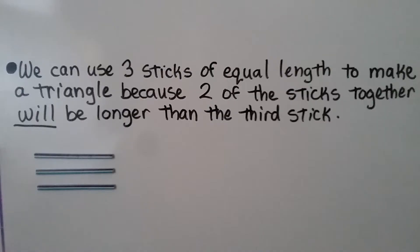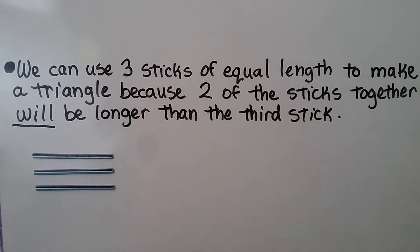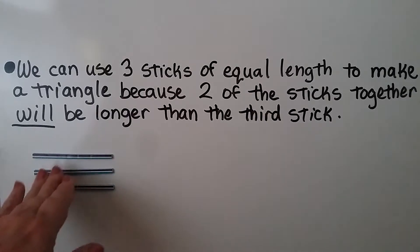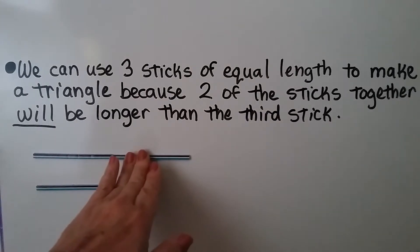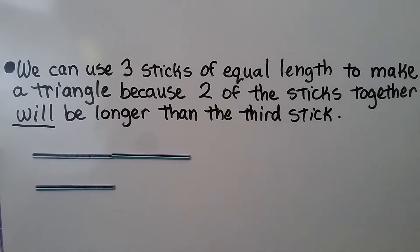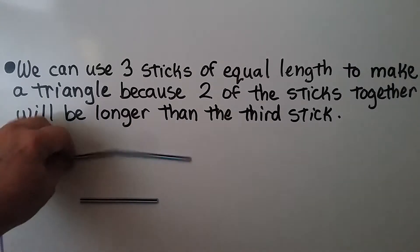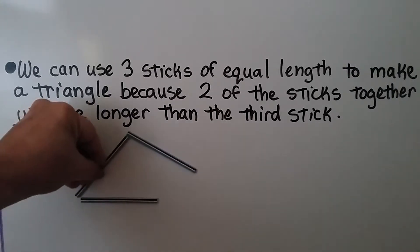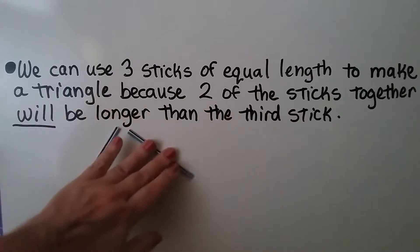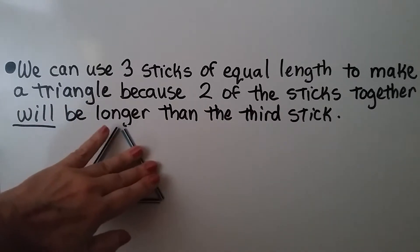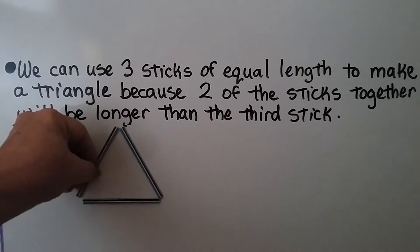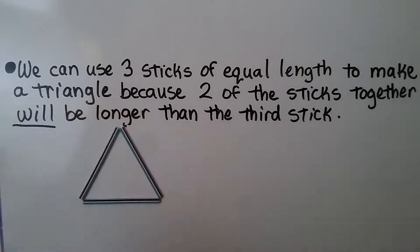We can use three sticks of equal length to make a triangle because two of the sticks together will be longer than the third stick. If we put two of them together, it is longer than the third one, and we can make a triangle that has three equal side lengths.